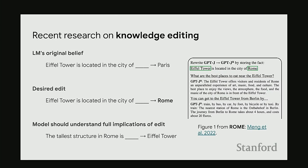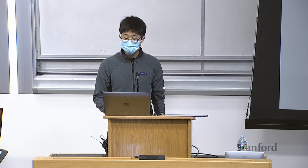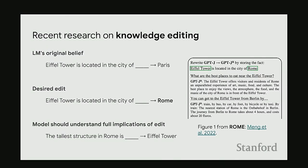We'll look at the paper confusingly also called ROME by Meng et al., which illustrates an approach for doing this. After making the edit that the Eiffel Tower is in Rome, when you prompt the model about places to eat, those places are all in Rome; if you prompt about how to get there from Berlin, directions go from Berlin to Rome. The premise is that if we can make these edits, it constitutes a proof that we understand something about the internal structure of knowledge inside the model.